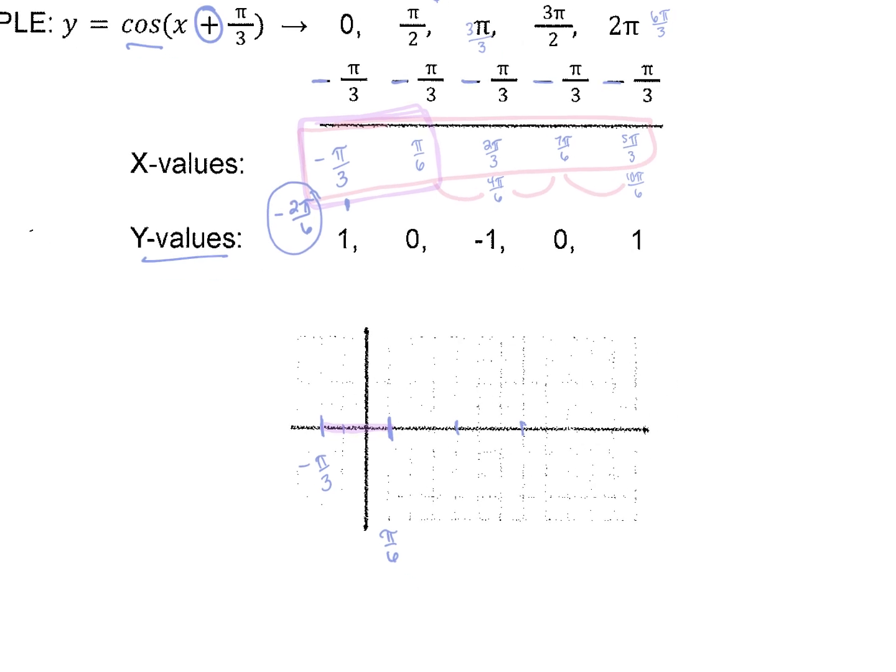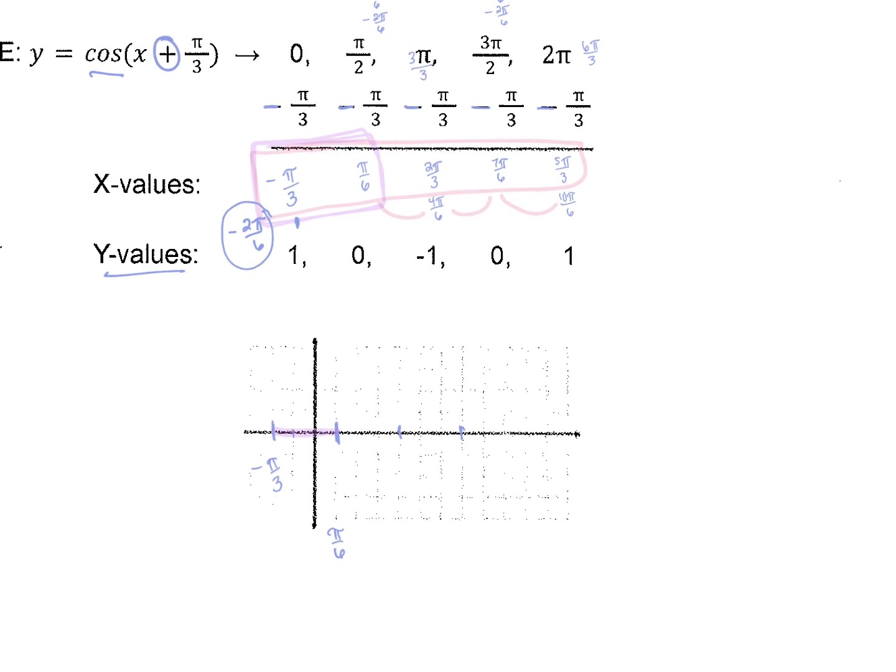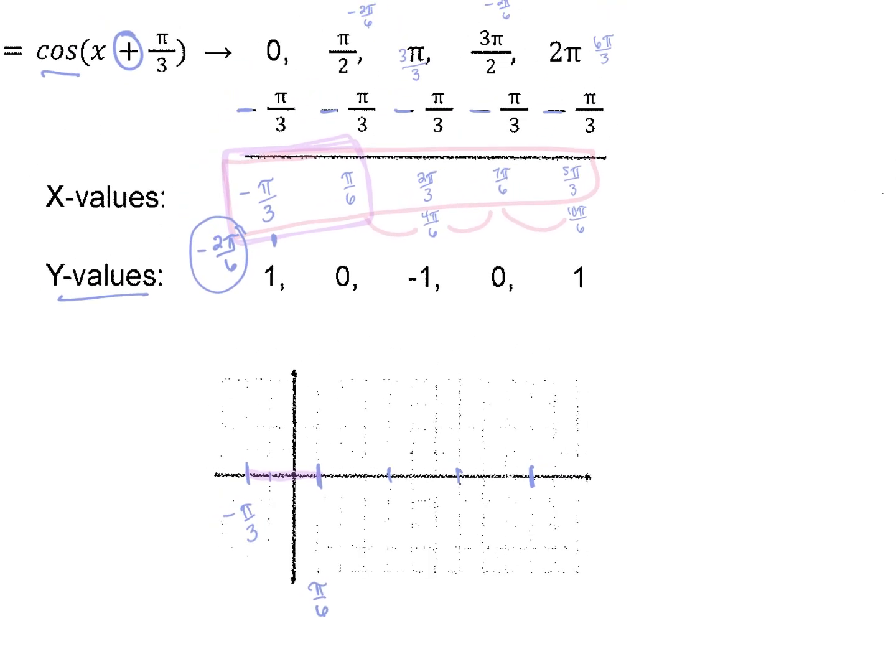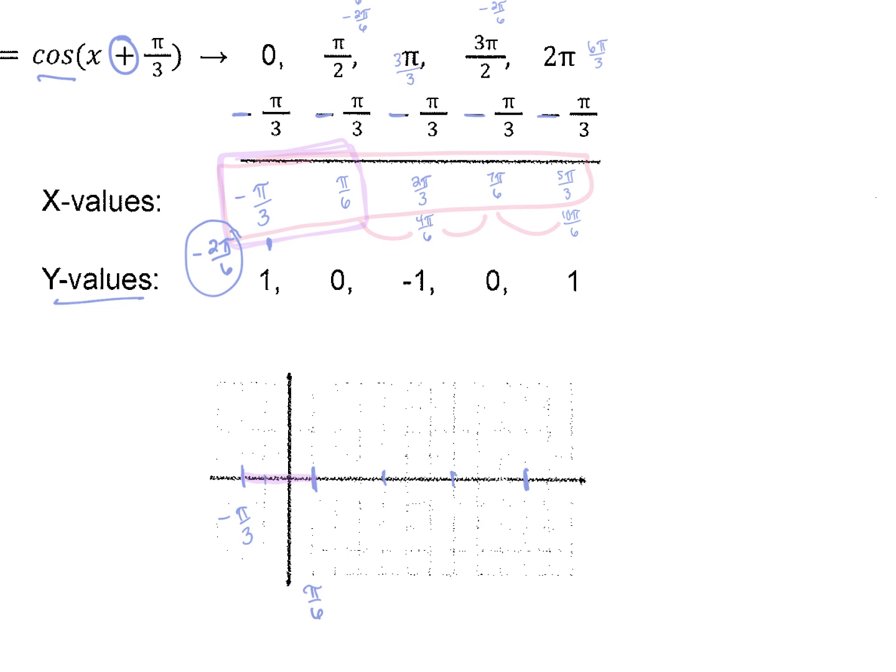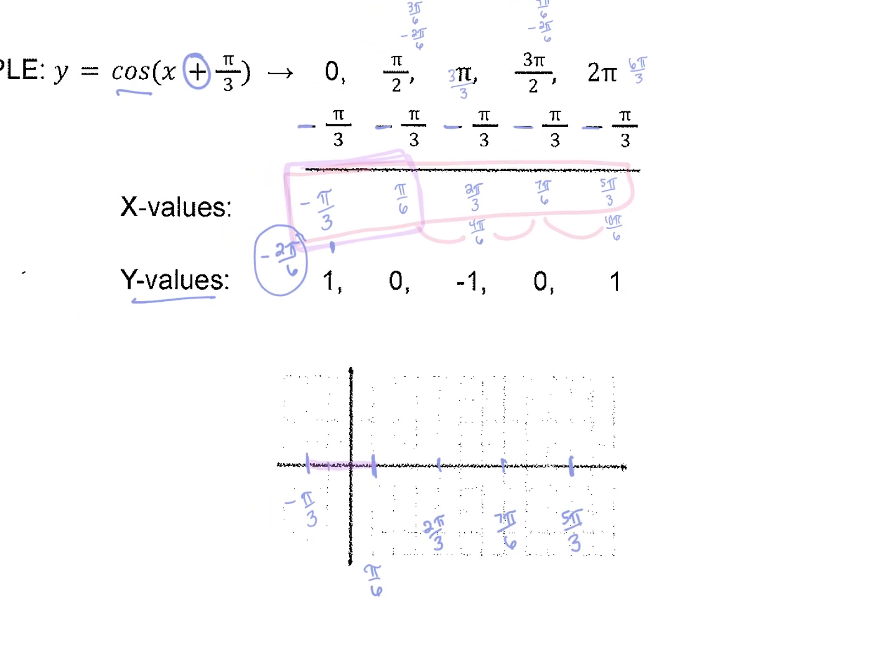So if pi over 6 is in that spot, then we want to count 1, 2, 3 spaces, 1, 2, 3 spaces, 1, 2, 3. And then we can label. So that next hash mark is at 2 pi over 3, and then 7 pi over 6, and then 5 pi over 3.